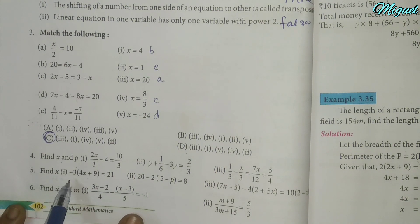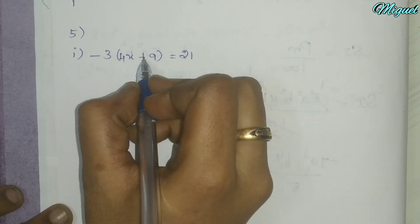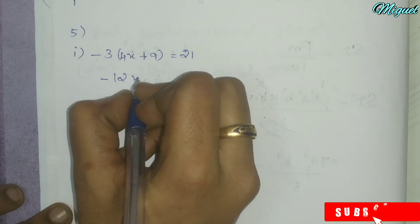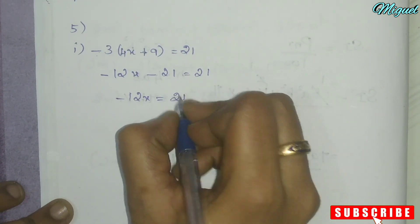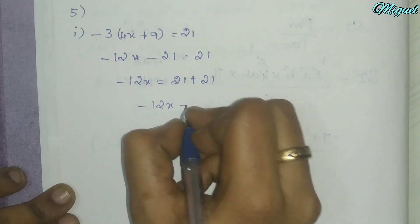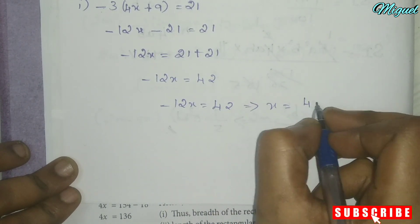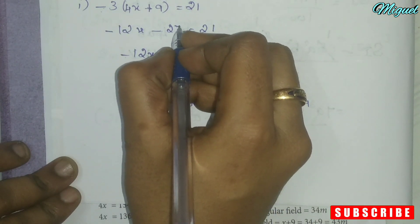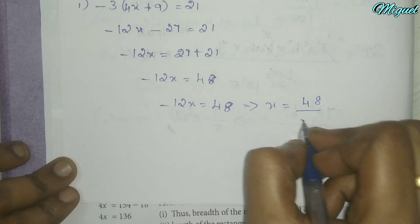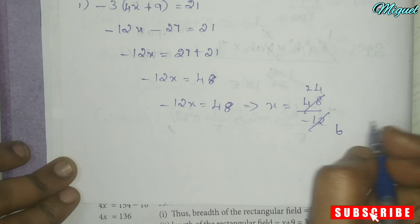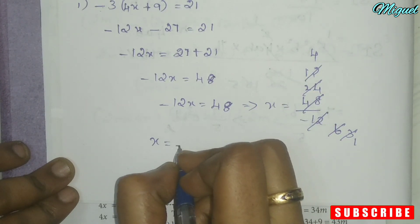Find x: subdivision 1, minus 3 into (4x plus 9) equals 21. Multiplying: minus 12x minus 27 equals 21. So minus 12x equals 21 plus 27 equals 48. Therefore x equals 48 divided by minus 12, giving x equal to minus 4.